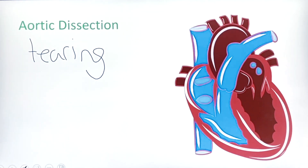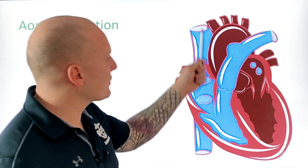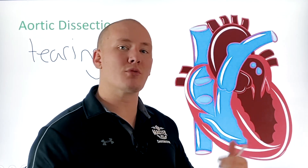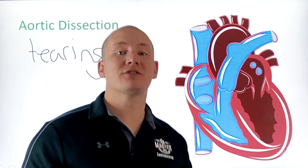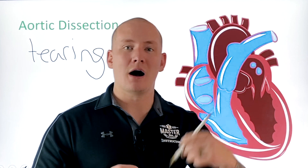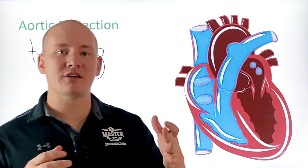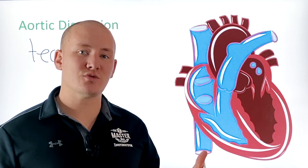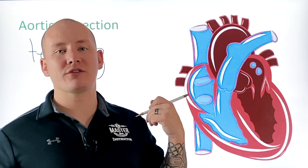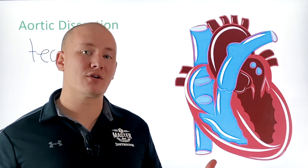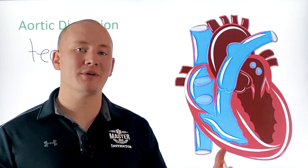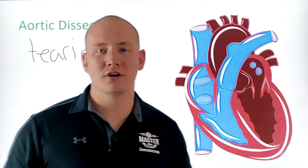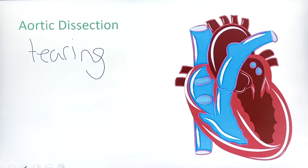Another key feature of aortic dissection is that the pain can migrate. As the tear progresses and creates a false lumen — where blood gets between the tunica intima and tunica media — the pain can move and shift. A good assessment question is: where did the pain start, and where does it feel like it is now? If the patient reports it has moved, that migrating pain is a more common symptom of aortic dissection than of myocardial infarction, and it's important not to miss.